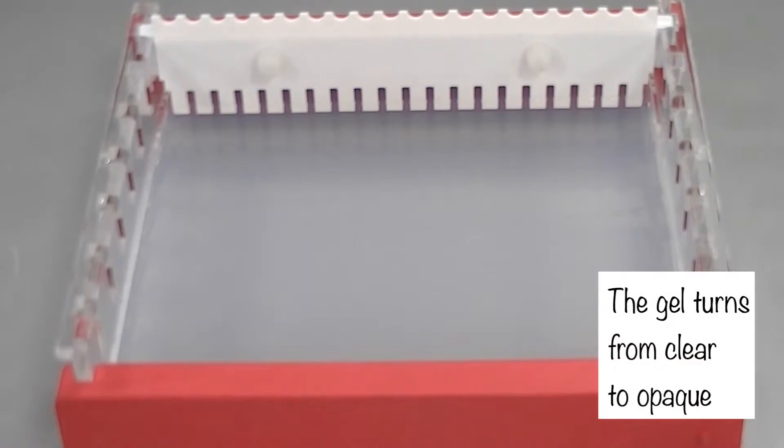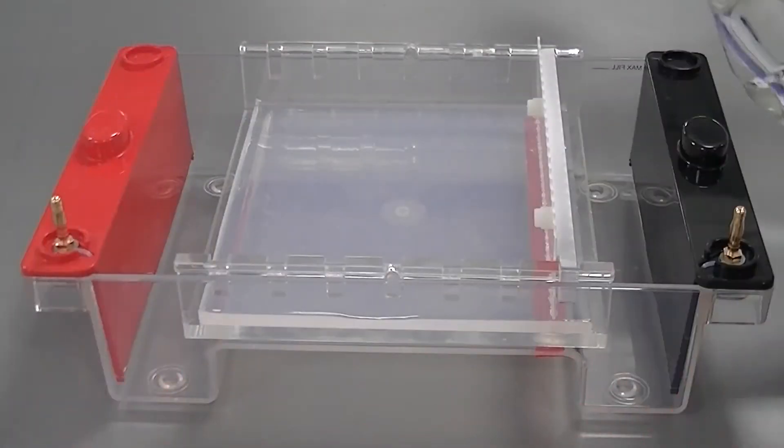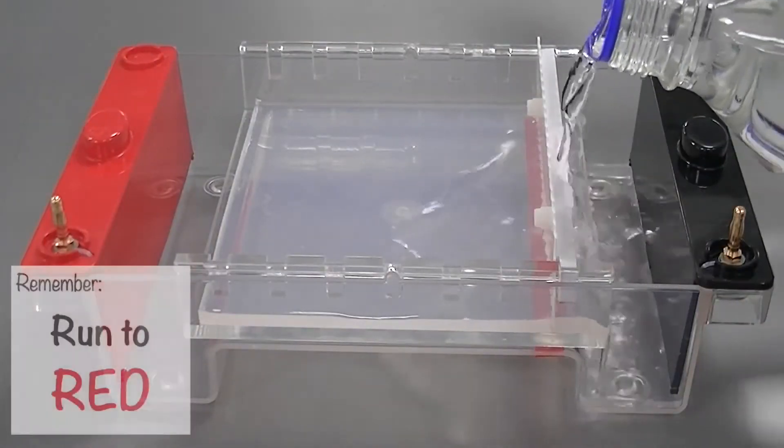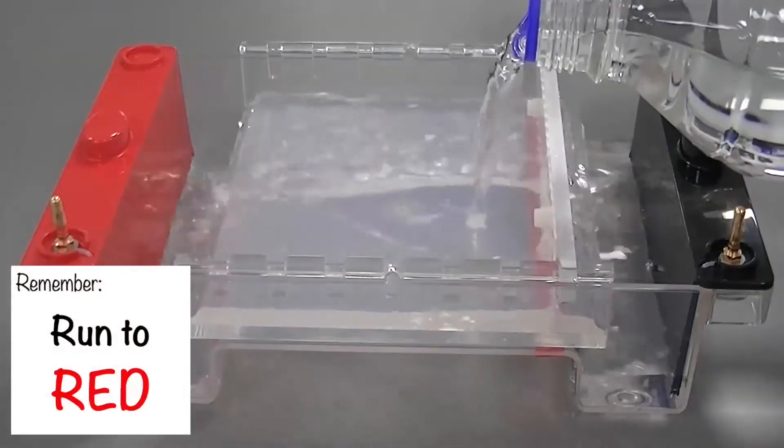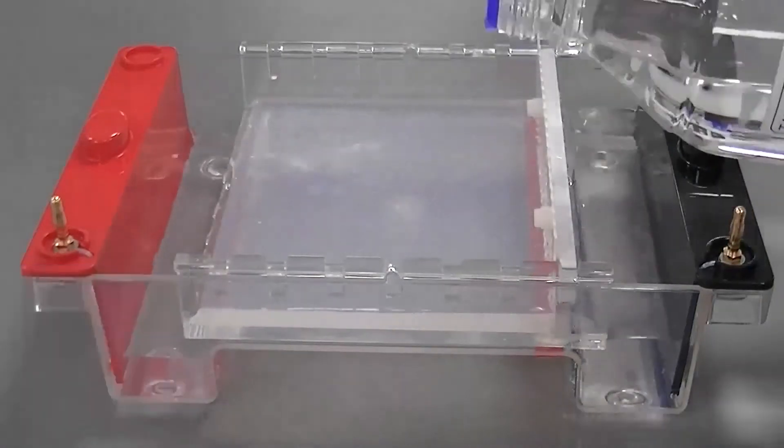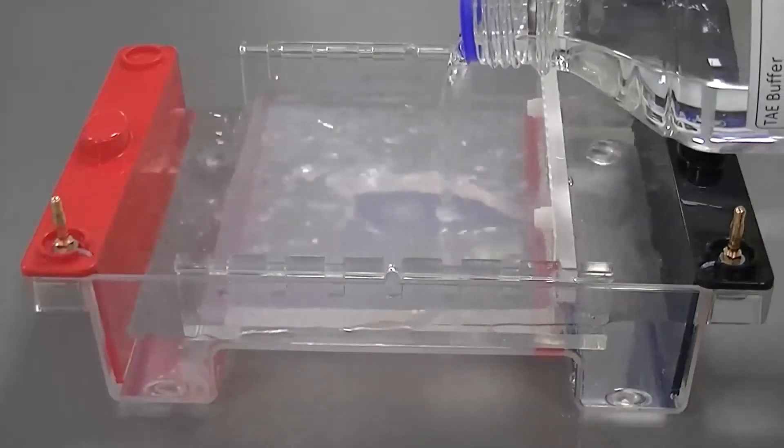Place the tray into the tank with the comb at the black end. DNA will migrate to the positive anode because of the negative charge on the phosphates of the DNA. Fill the tank with TAE buffer until it covers the gel by 1cm.